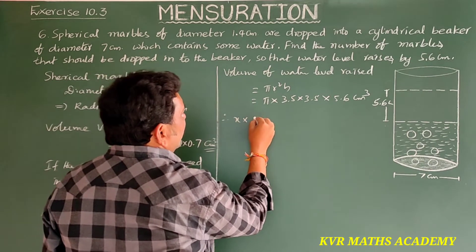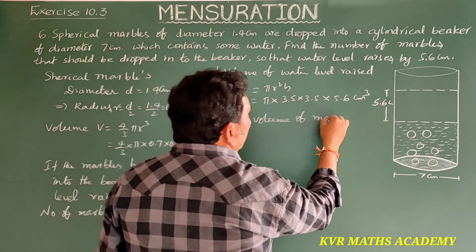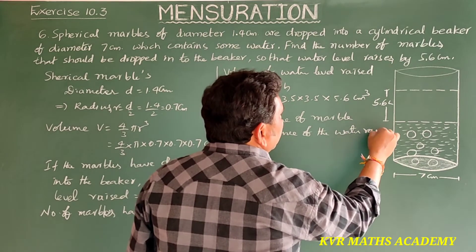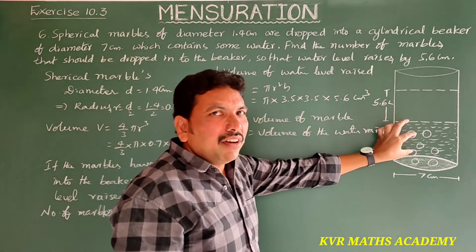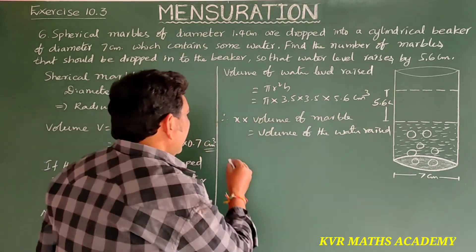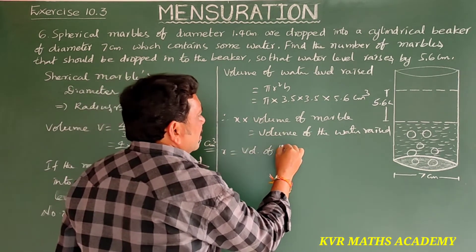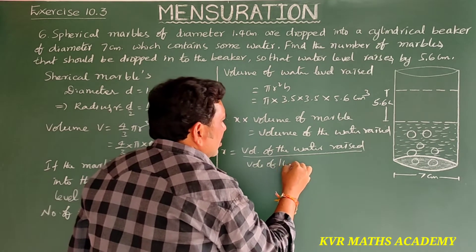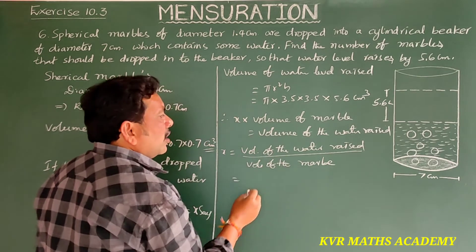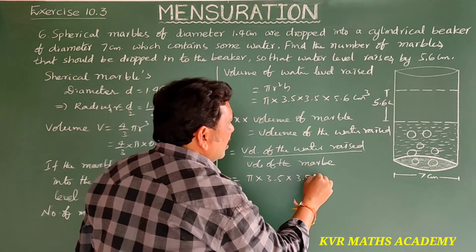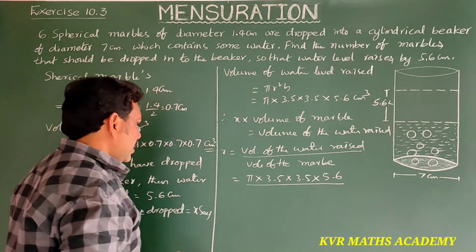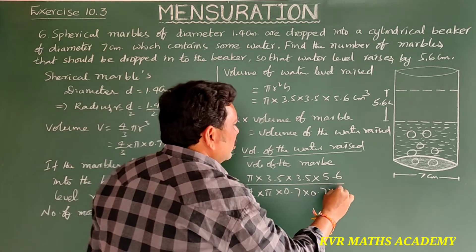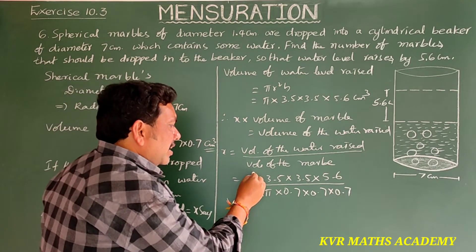Therefore x into volume of marble equals volume of the water raised. So x equals volume of the water raised divided by volume of the marble. That is: pi into 3.5 into 3.5 into 5.6, divided by 4 by 3 into pi into 0.7 into 0.7 into 0.7. Pi cancels from numerator and denominator.